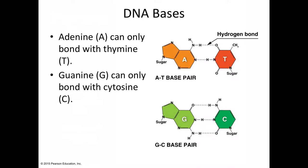Back to those nitrogenous bases: in DNA we find four bases, and they bind in a complementary fashion — we call that a base pair. The first is adenine, abbreviated A, and adenine binds to only one base: thymine, abbreviated T. They're bound together by hydrogen bonds — structural attractions, but not particularly strong.